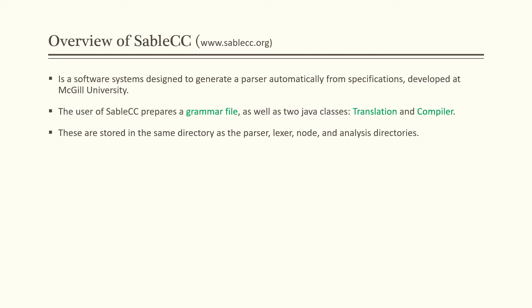The user of SableCC, like a programmer, needs to provide a grammar file as well as two Java classes: a translation class and a compiler class. These are the three documents we need to prepare before using SableCC. These are stored in the same directory as the parser, lexer, node, and analysis directory that is created when you install SableCC on your machine.